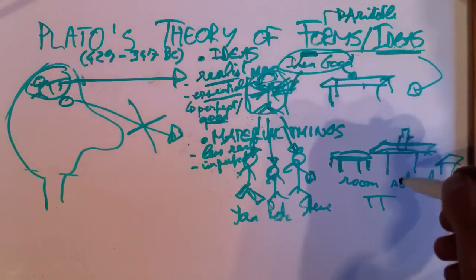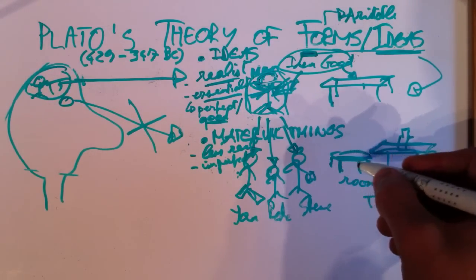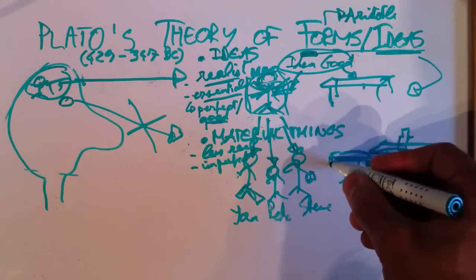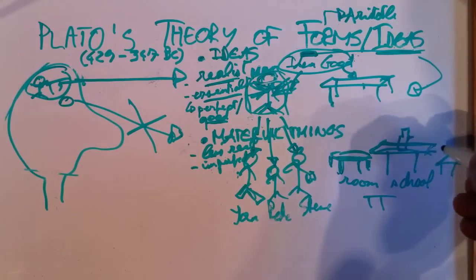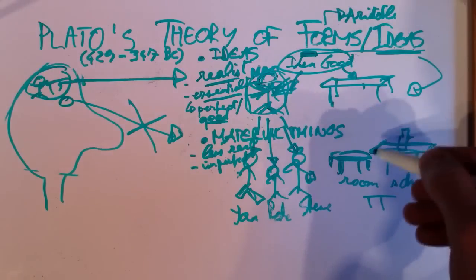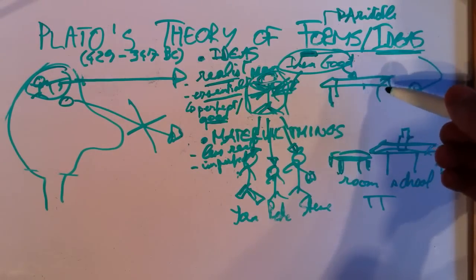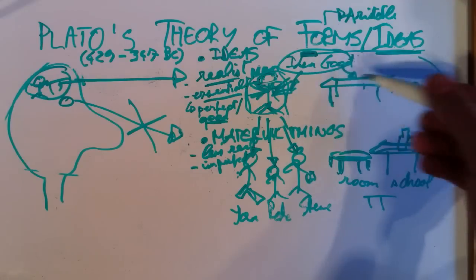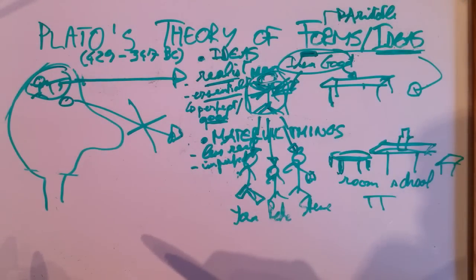For tables, the same. These tables are a little bit imperfect. You know, they are not fully stable. Because one leg is a little bit shorter than the other. Or the surface is not fully straight, right? And the bottle might drop. They are all imperfect. And in that sense, they are a little bit less stable. They are less stable than the idea of table. The perfect idea. So, this is full being, full reality. This is a little bit less real.